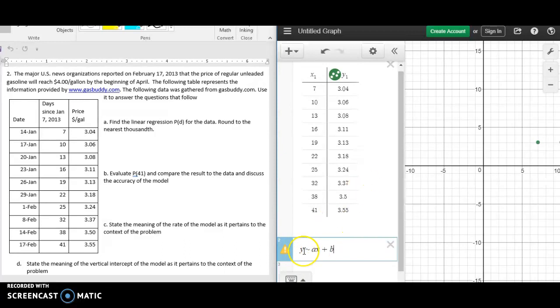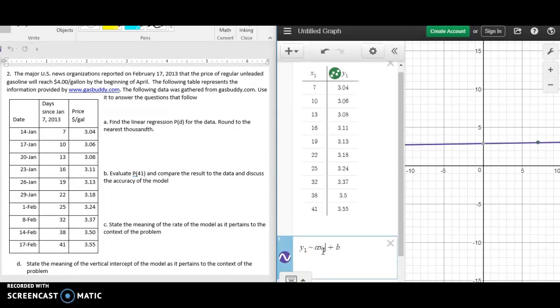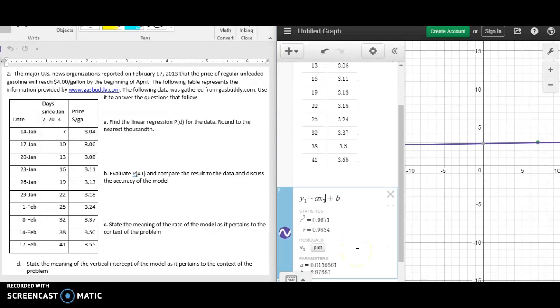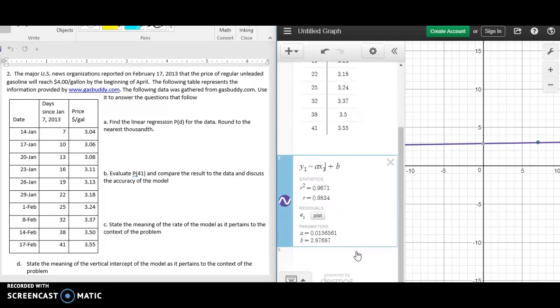We want y1 and x1, and this gives us the information in terms of the slope and the vertical intercept.